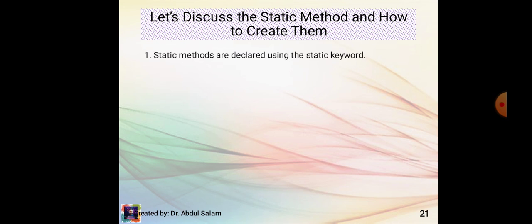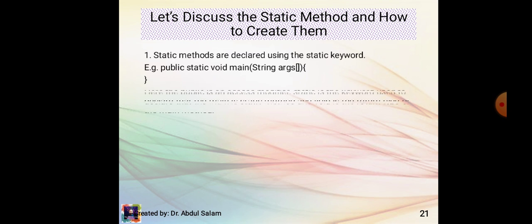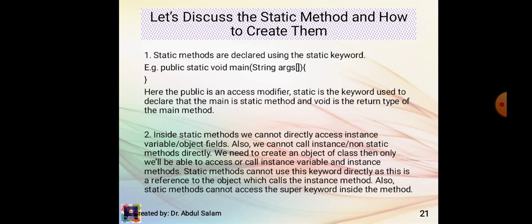Static methods are declared using the static keyword. For example: public static void main(String[]). Here, public is the access modifier, static is the keyword used to declare that main is a static method, and void is the return type of the main method.